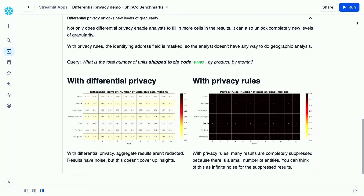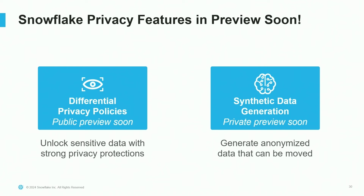That concludes the demo. Two privacy features are releasing into preview. First, differential privacy policies are coming to public preview soon — that's what we talked about today, so keep an eye out. The second is separate from differential privacy: synthetic data generation, also coming to preview soon. Think of it as anonymized versions of sensitive data — for example, you have sensitive production data you want to move to testing and development environments, but can't move the sensitive data itself. With synthetic data generation, you create an anonymized version of the dataset that can then move. If you're interested in either feature, please reach out to your Snowflake contact.